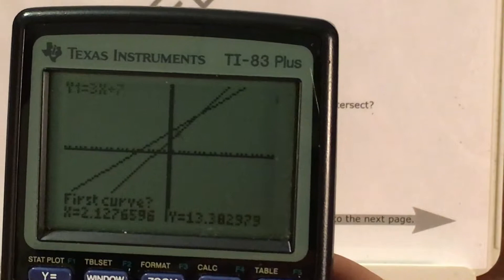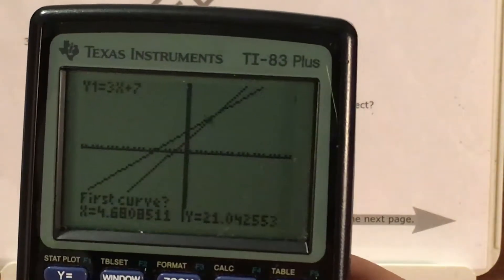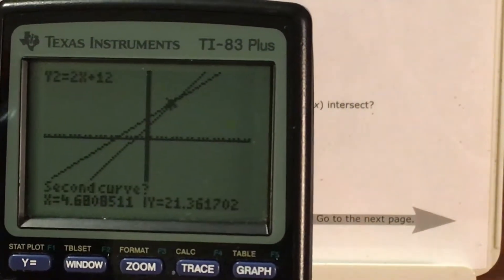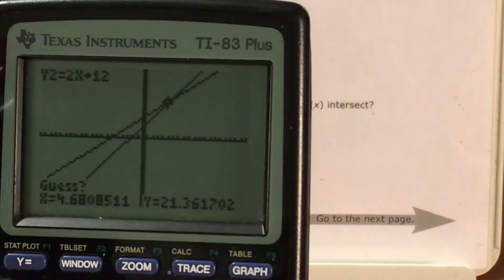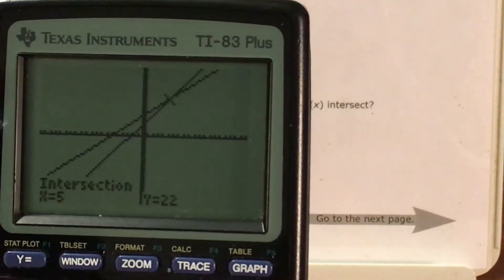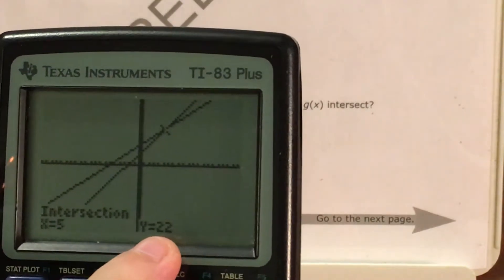I can only move left or right now, not up or down. And I go along my first curve until I get close. Second curve, guess. Just keep pressing enter until it gives me x is 5, y is 22.